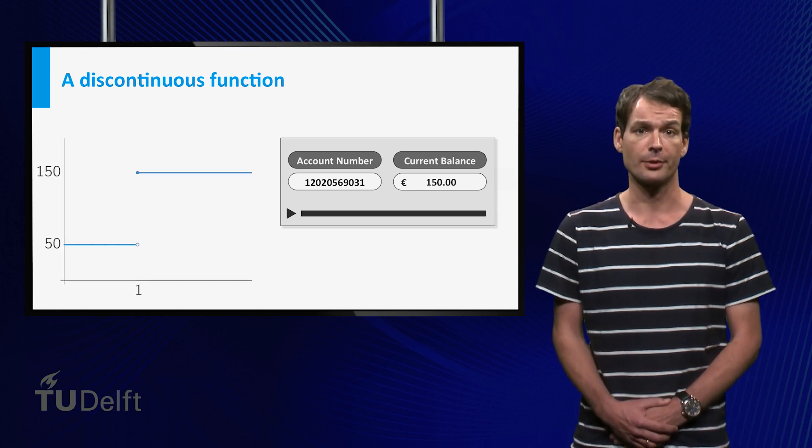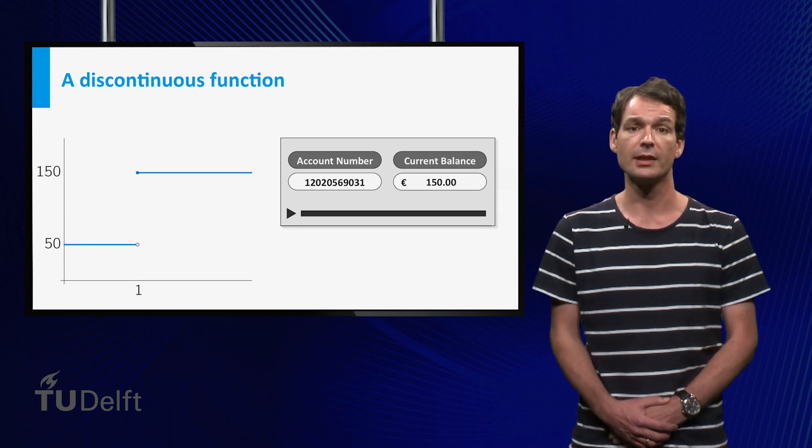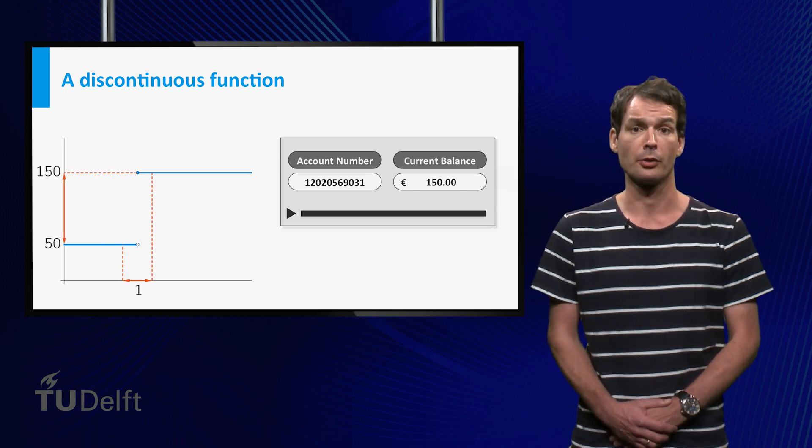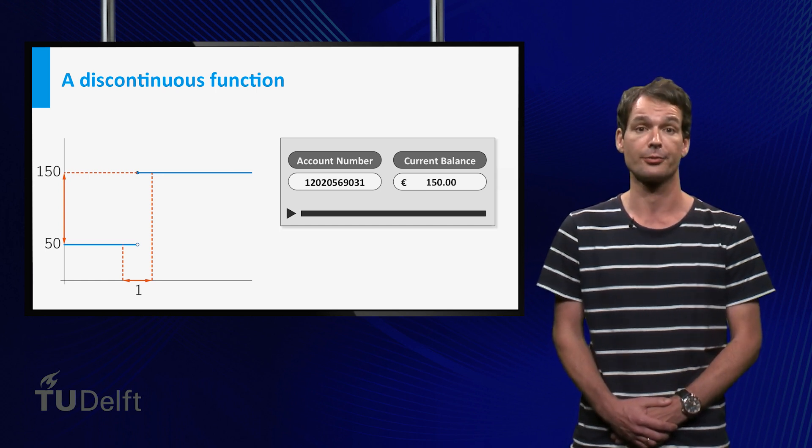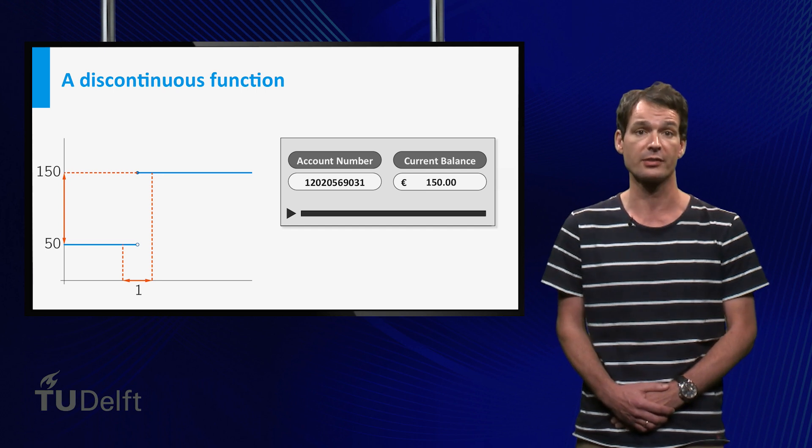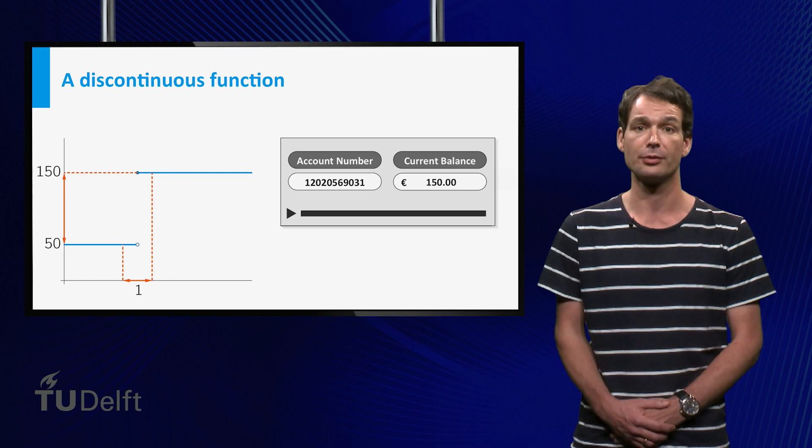If you look at the graph of this function, which is the amount of money on your bank account, you can see that a small change on the horizontal axis from t equals 1 to the left will always result in a change on the vertical axis of 100, that is, a large change. This is an example of a discontinuous function.